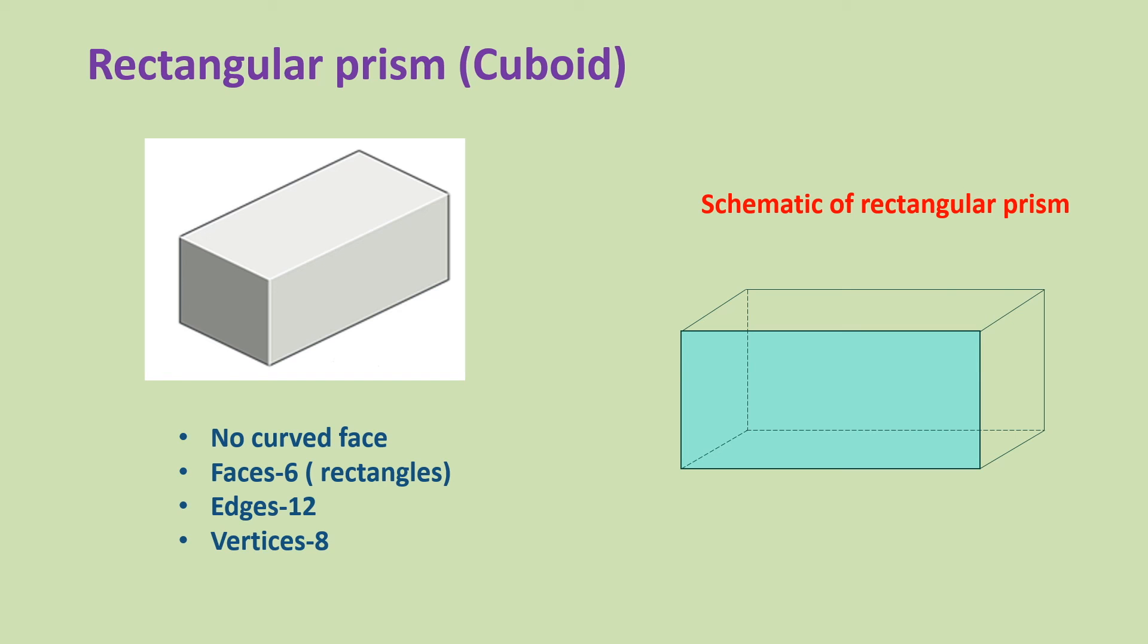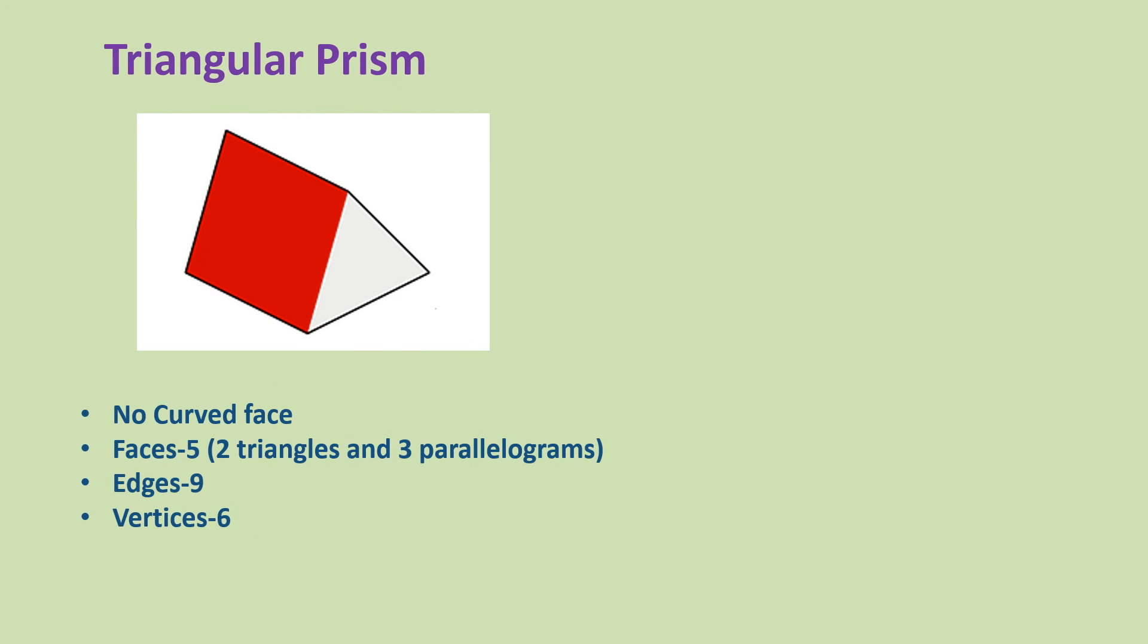Triangular prism has no curved face but it has five faces which includes two parallel triangles and three parallelograms. It has nine edges and six vertices. This is the schematic of triangular prism.